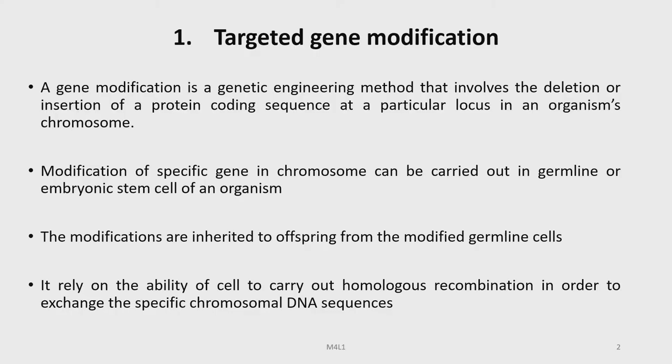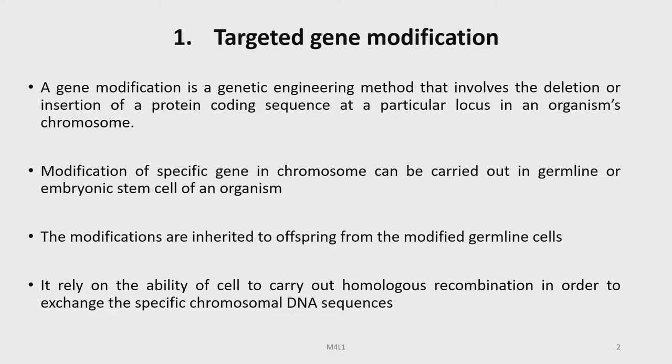Sometimes we may also include here an antisense RNA, which does not necessarily code for a protein. Modification of a specific gene in a chromosome can be carried out in germline or embryonic stem cells of an organism. The modifications are inherited by offspring from the modified germline cells, and these modifications rely on the ability of the cell to carry out homologous recombination in order to exchange specific chromosomal DNA sequences.